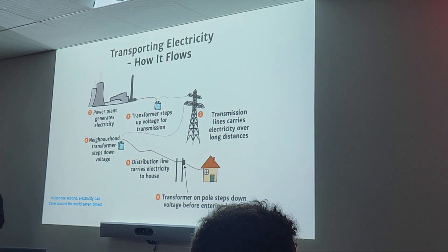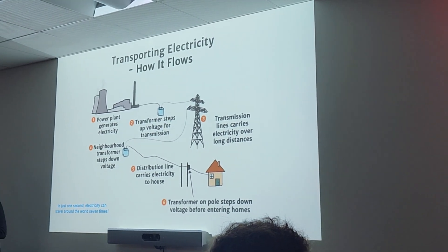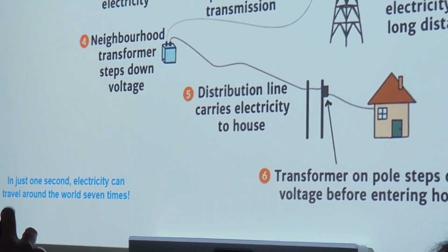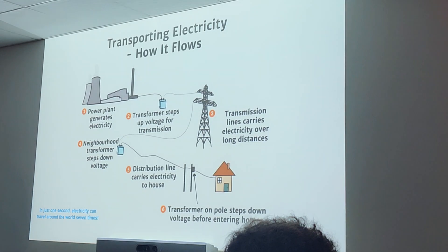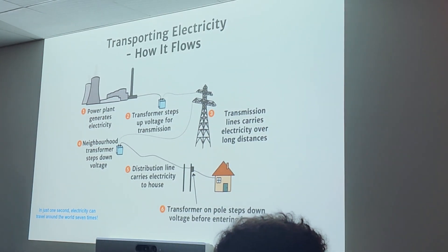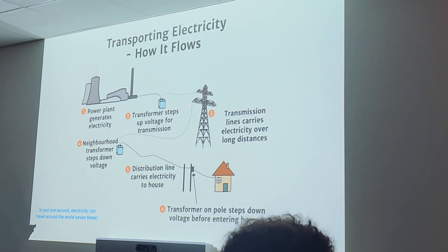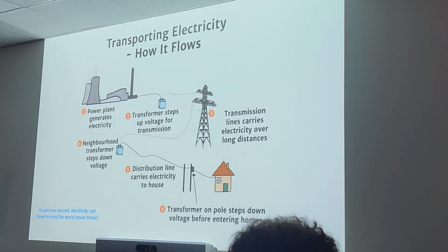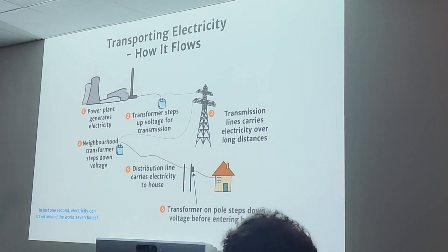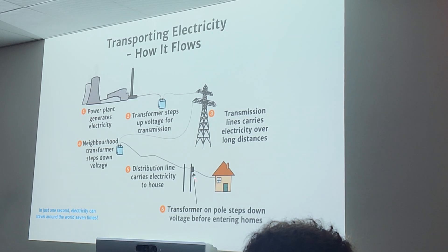First of all, we need to have a power plant where electricity is generated — it could be from wind, coal, natural gas, whatever the case is. Then the electrical current is sent through transformers, which step up that voltage in order to be transmitted to the power lines. The transmission lines carry the electricity over long distances to neighborhoods. Then we have a transformer within neighborhoods that steps down the voltage — we don't want crazy amounts of voltage coming into our homes. Distribution lines within neighborhoods carry electricity within our houses, and a transformer on the pole further steps down the voltage before it enters our homes.